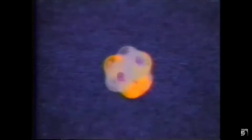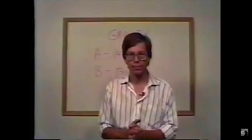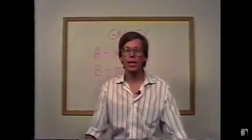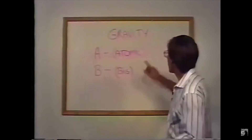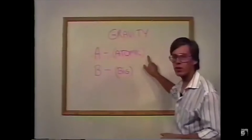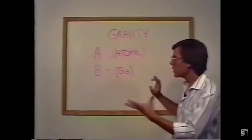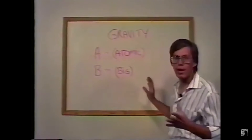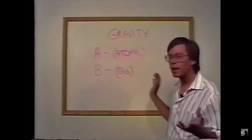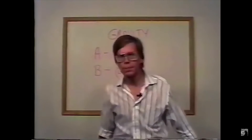Gravity A is the wave that you need to access and amplify to enable you to cause space-time distortion for interstellar travel. To keep them straight, just remember that gravity A works on an atomic scale, and gravity B is the big gravity wave that works on a stellar or planetary level.